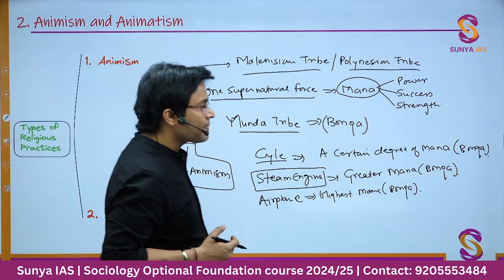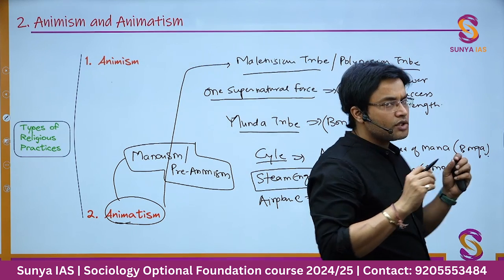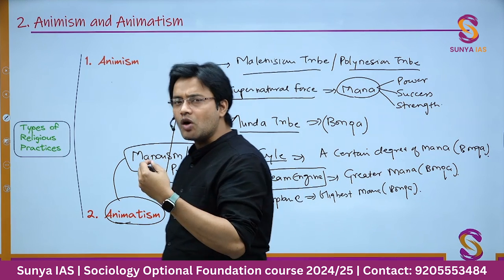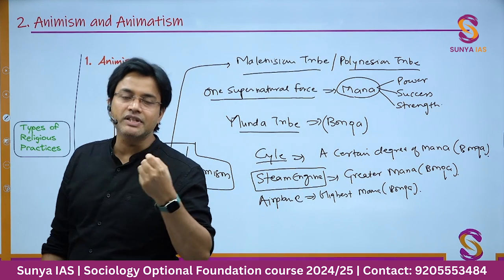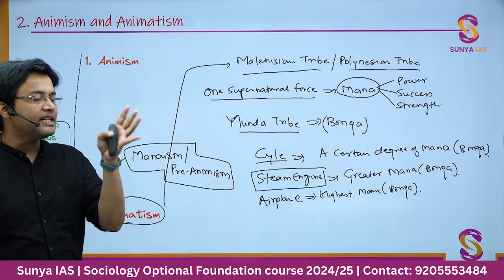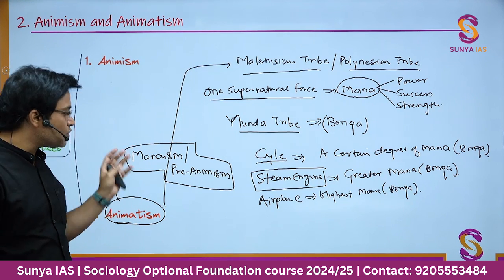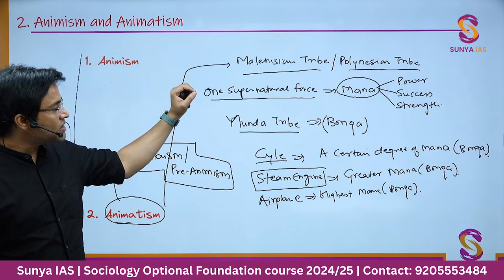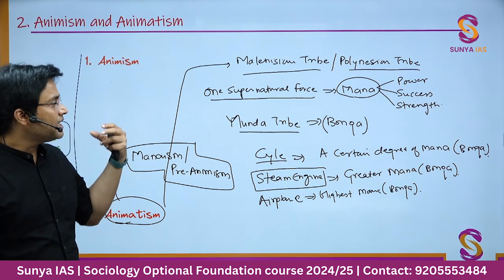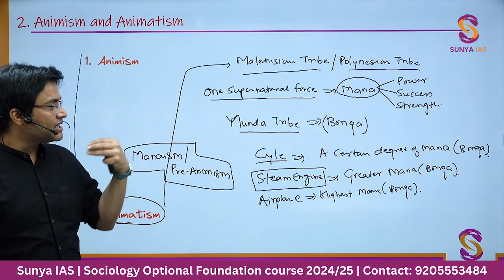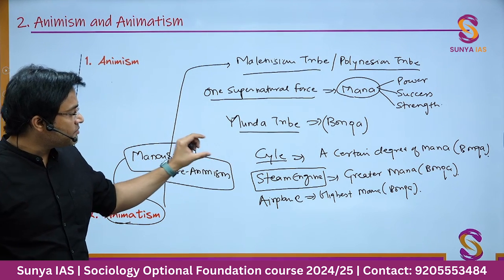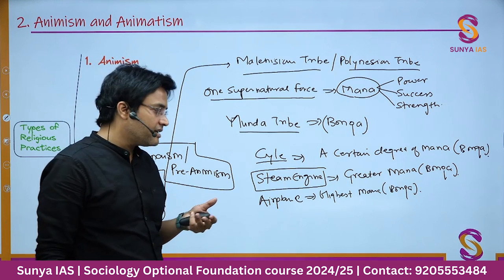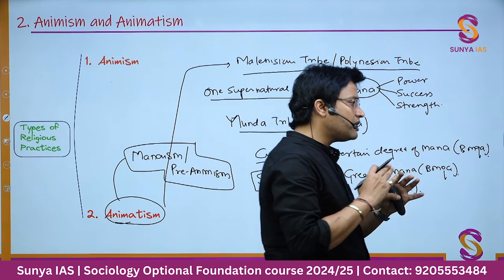To illustrate: if the tribal people see a cycle running with human labor, it has a certain degree of mana or bonga. If they see a steam engine with higher power, they would say it has greater mana or bonga. And if they see an airplane, they would say it has the highest mana or bonga. This is how animatism should be understood — one supernatural force with varying degrees, present in all objects.